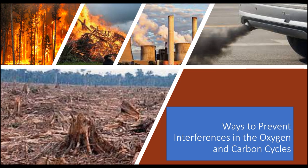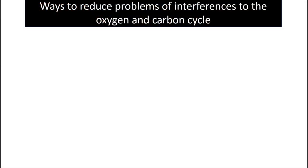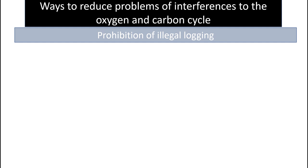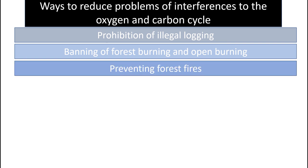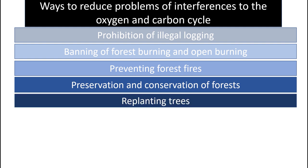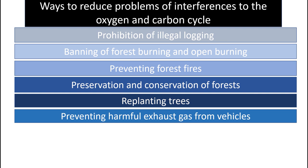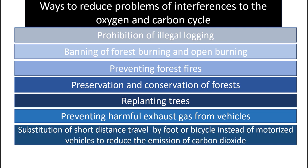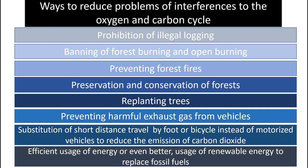Therefore, suitable measures should be taken to ensure a balanced amount of oxygen and carbon dioxide in the atmosphere. These measures include prohibition of illegal logging, banning of forest burning and open burning, preventing forest fires, preservation and conservation of forests, replanting trees, preventing harmful exhaust gas from vehicles, substitution of short-distance travel by foot or bicycle instead of motorized vehicles to reduce the emission of carbon dioxide, and efficient usage of energy or even better, usage of renewable energy to replace fossil fuels.